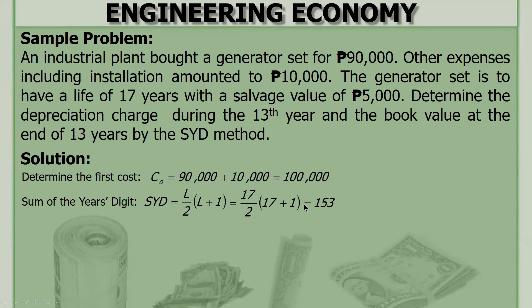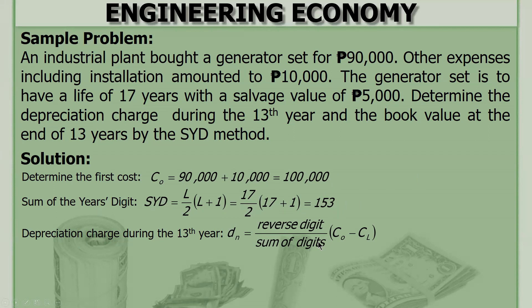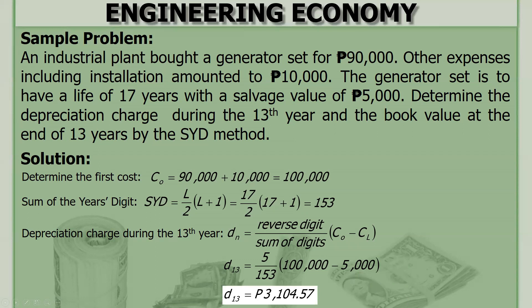You can verify manually: one plus two plus three up to seventeen equals 153. The depreciation charge during the 13th year is: reverse digit over SYD times (C sub 0 minus C sub L), where SYD is 153, C sub 0 is 100,000, and C sub L is 5,000. To find the reverse digit for year 13, start from 17 in reverse order: 17, 16, 15, 14, 13, 12, 11, 10, 9, 8, 7, 6, 5 — so the reverse digit on the 13th year is 5. That gives the depreciation charge during the 13th year.